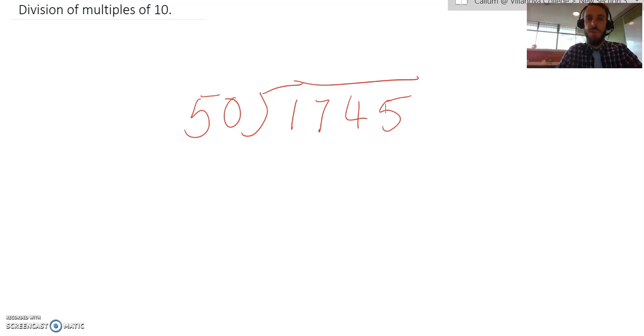So remember, if we're dividing by multiples of 10, so in this instance we're dividing by 50, we can break it down and first divide by 10 and then divide by 5. And we remember the rule of dividing by 10, we just shift the decimal place one spot over. So just by doing that, I've divided by 10. I'm going to cross off the 0 to indicate that we've done that step.